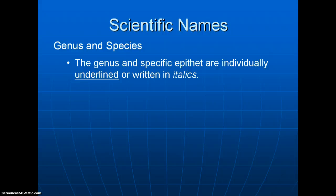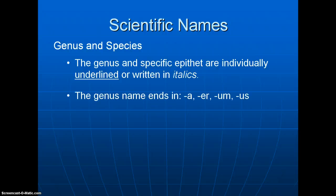In order to write these names, the genus and the specific epithet are individually underlined, or alternatively written in italics if you have a word processor. It is recommended — or required — that you use one or the other consistently in a document; don't mix them. Another trick: the genus name ends in either A, E, R, UM, or US almost all the time.